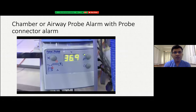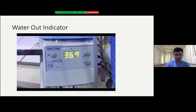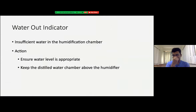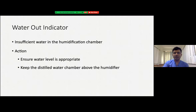The chamber probe can also activate with a probe connector alarm when the temperature probes are faulty — again, they must be replaced. The humidifier base alarm can occur because of insufficient water, which can result in dangerously high temperatures. Ensure the water level is appropriate. Also ensure, as shown in the demonstration, that the distilled water chamber is always positioned above the level of the humidifier — not below — so that the autofilling function works properly.